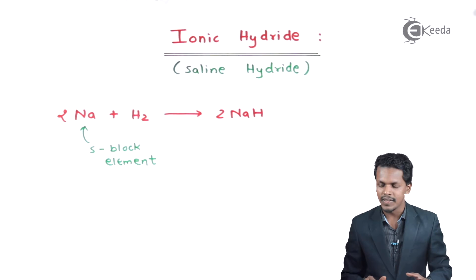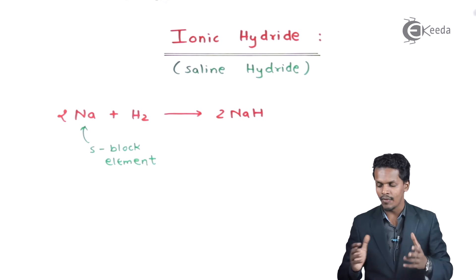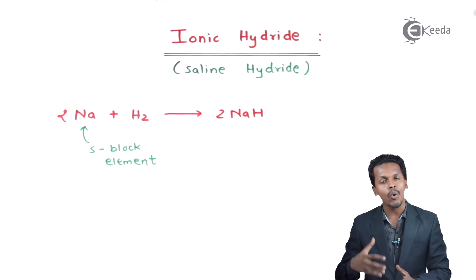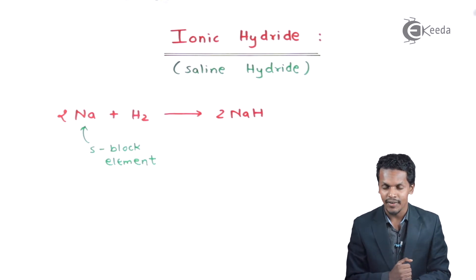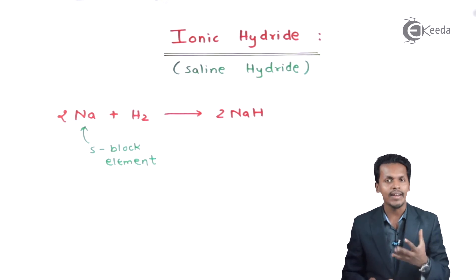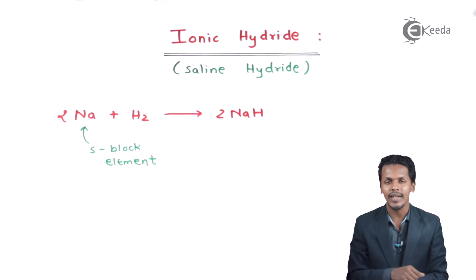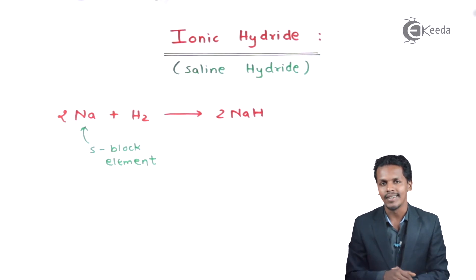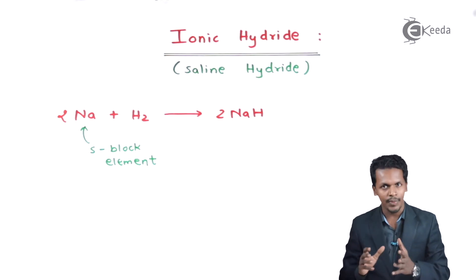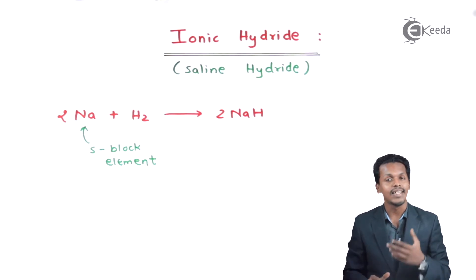If you talk about the melted form of sodium hydride or any ionic hydride, the melted hydride can conduct electricity. I want to discuss how they conduct electricity and what different properties are exhibited by melted hydride. Since the S-block elements are basically electropositive, the hydrogen will carry a charge of minus one.